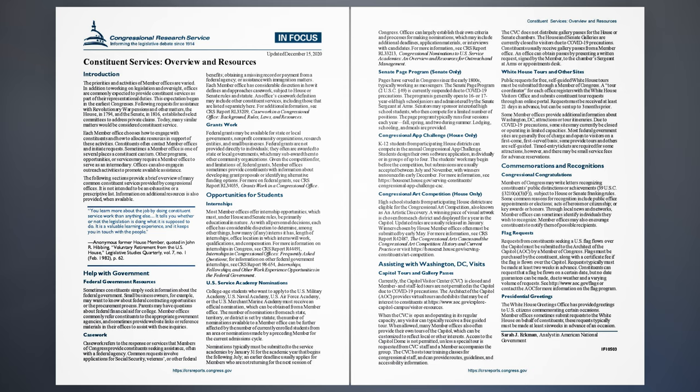Flag Requests. Requests from constituents seeking a U.S. flag flown over the Capitol must be submitted to the Architect of the Capitol (AOC) by a member of Congress. Flags must be purchased by the constituent, along with a certificate fee if the flag is flown over the Capitol. Requests typically must be made at least two weeks in advance. Constituents can request a flag be flown on a certain date, but no date guarantees can be made due to weather and a varying volume of requests. See http://www.aoc.gov/flags or contact the AOC for more information on the flag program.